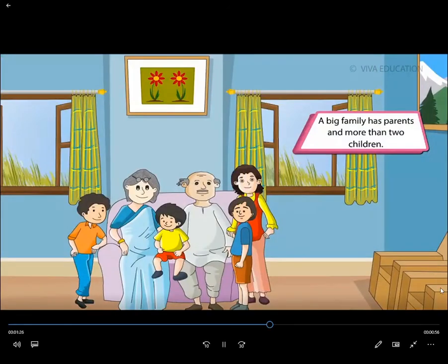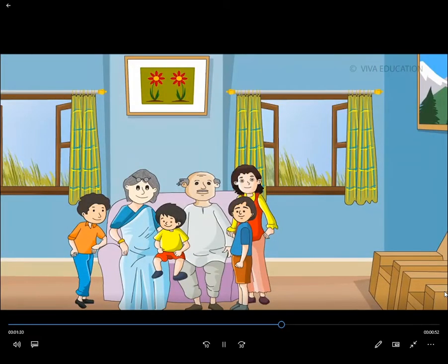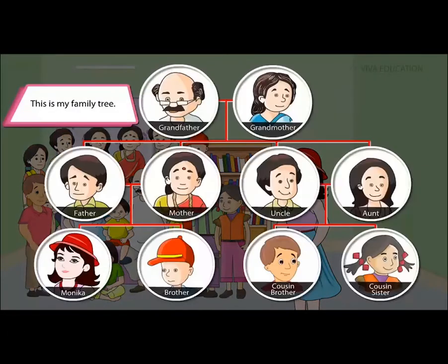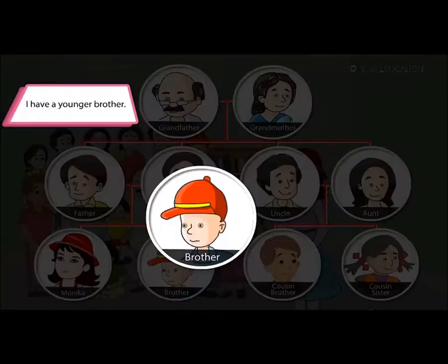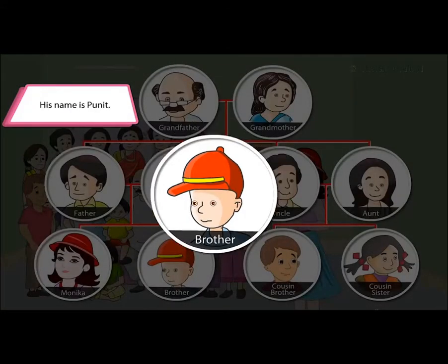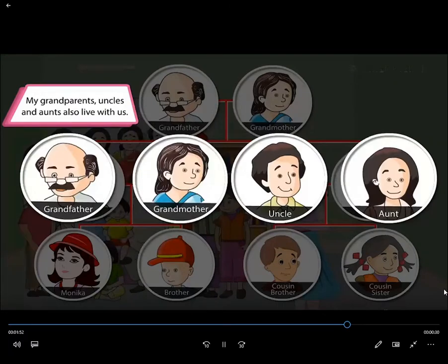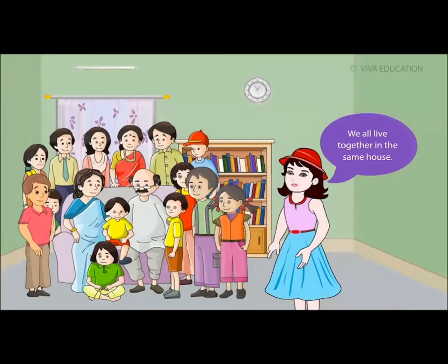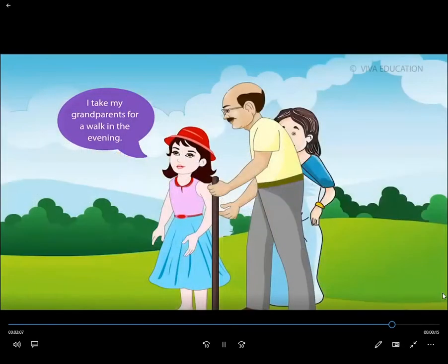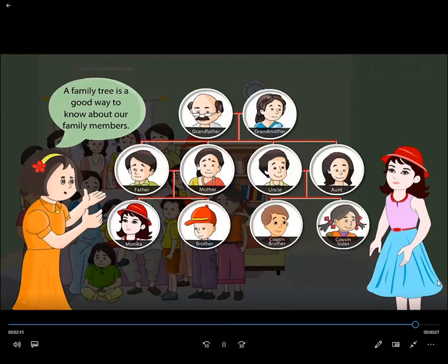A big family has parents and more than two children. I live in a joint family — this is my family tree, it shows how I am related to the people in my family. I have a younger brother named Punit, and one cousin sister and brother who live with us. My grandparents, uncles, and aunts also live with us — they are my relatives. We all live together, work together, and help each other. I take my grandparents for a walk in the evening. A family tree is a good way to know about our family members.